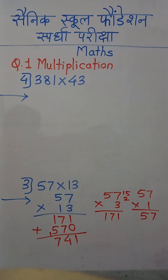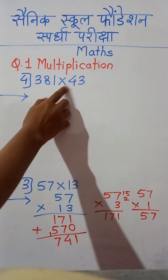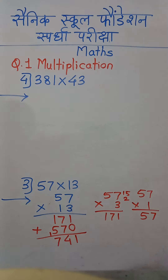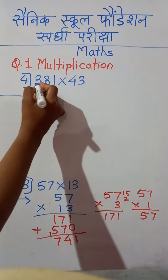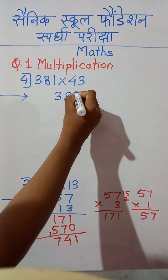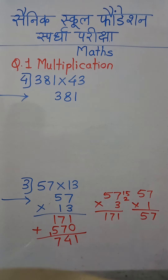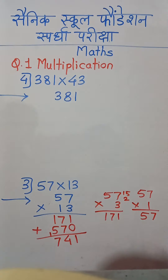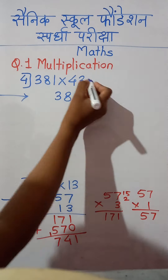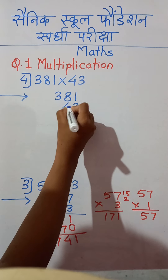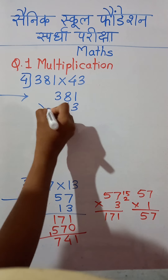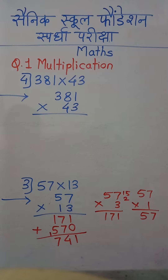The next example is 381 multiplied by 43 — a 3-digit number multiplied by a 2-digit number. We write this example vertically: 381, then 43 with 3 below 1 and 4 below 8. Give the sign of multiplication and start doing this multiplication.